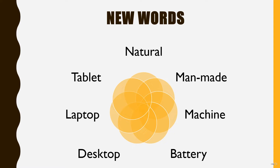Desktop — a computer kept at one place. Spelling: D-E-S-K-T-O-P, Desktop. Laptop — it is also a type of computer. Spelling: L-A-P-T-O-P, Laptop.